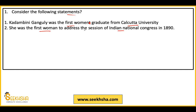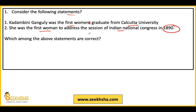That means she gave a speech there, and she did this in 1890. You have to tell which among the above statements are correct.